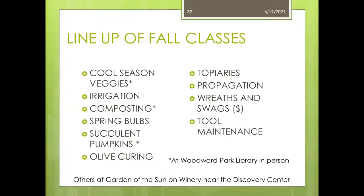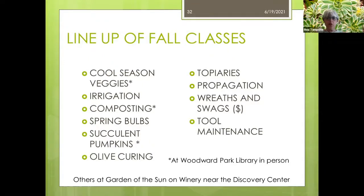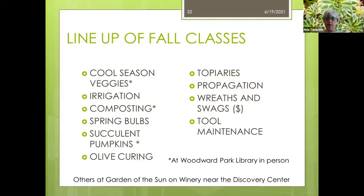We are very excited to start getting back to in-person programming. You can also call the library at 600-3135 or visit our website. Our fall class lineup includes irrigation basics, how to plant spring bulbs, olive curing, topiaries, propagation, wreaths and swags — that one has a fee and is limited to 15 people — and tool maintenance. Classes without an asterisk will be held at the Garden of the Sun Winery right next door to the Discovery Center.